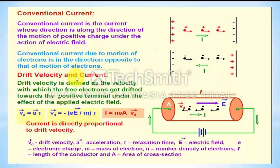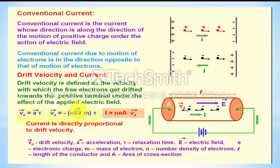Drift velocity and current: Drift velocity is the velocity of the free electron with which it drifts towards the positive terminal. Drift velocity equals acceleration into time. Acceleration, from Newton's second law, is force by mass. The force on the electron is e into E, where capital E is the electric field between the two terminals.